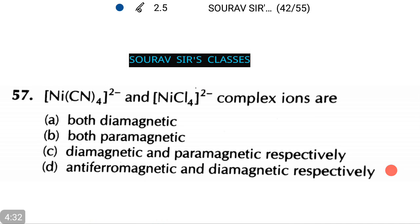The next question is a very important one. We need to find whether the following compounds are diamagnetic or paramagnetic, antiferromagnetic or otherwise. We are given nickel cyanide with two electrons and nickel chloride with two free electrons complex ions.